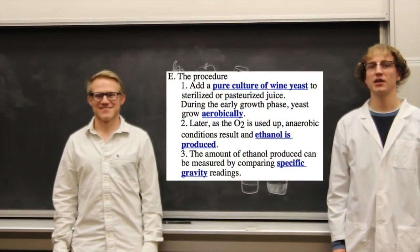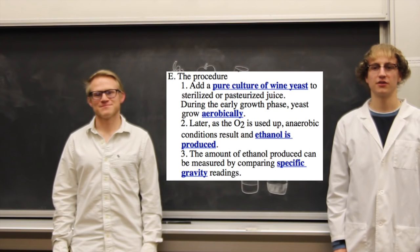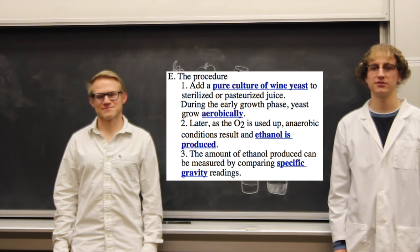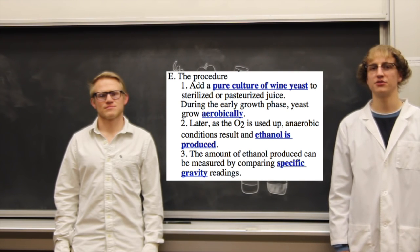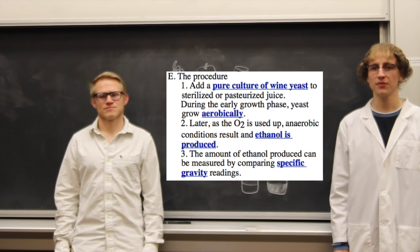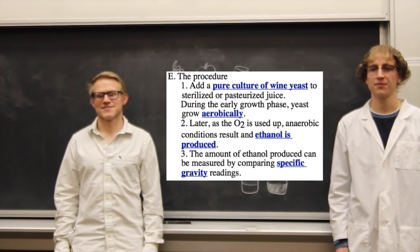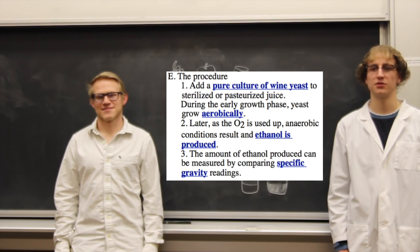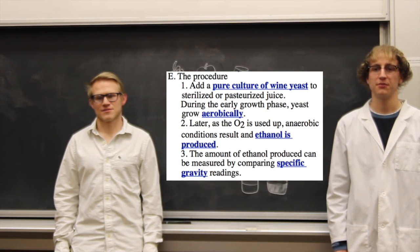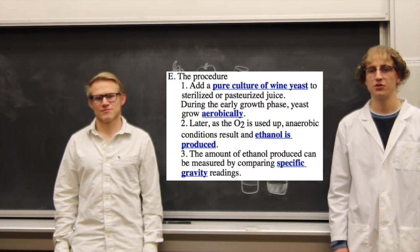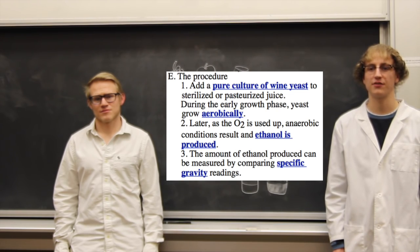The final thing we'll talk about today is the procedure of your wine experiment. We'll start by adding a pure culture of wine yeast to a sterilized or pasteurized juice. This juice has been poured in a jug already, so it's aerated with around 300 parts per million of oxygen. During the early growth phase, yeasts grow aerobically, taking up this oxygen, and later oxygen is used up and anaerobic conditions result and ethanol is produced. The amount of ethanol produced can be measured by comparing specific gravity readings. You can look on the virtual edge for more specific procedures and how to use your specific gravity reader.